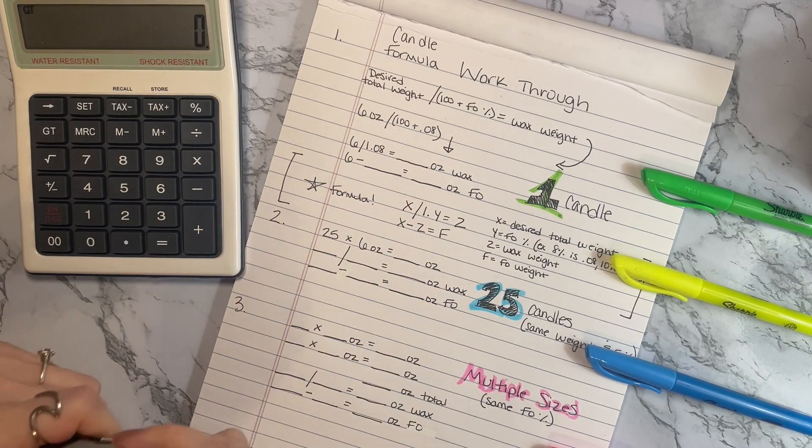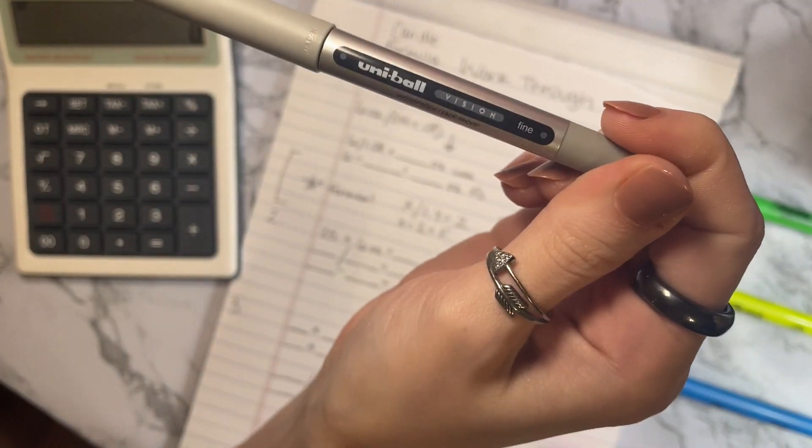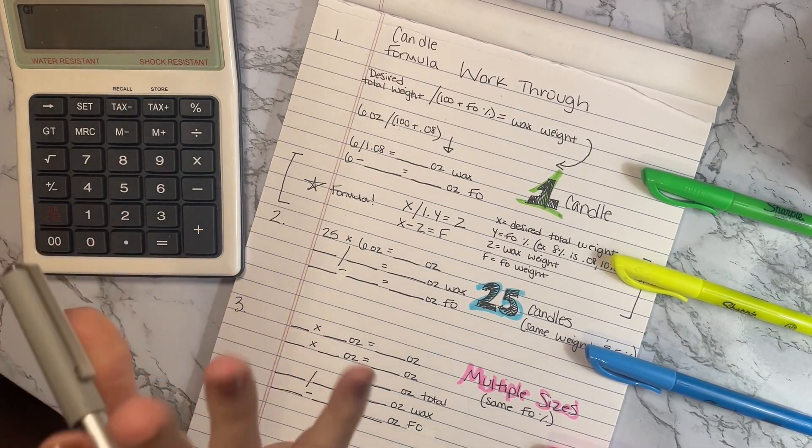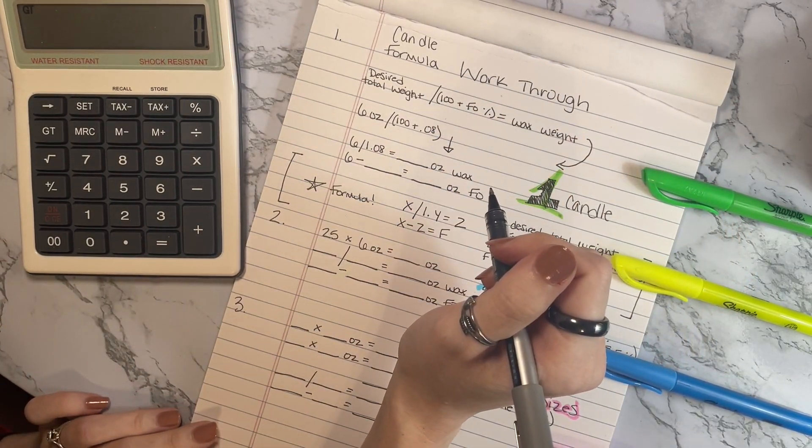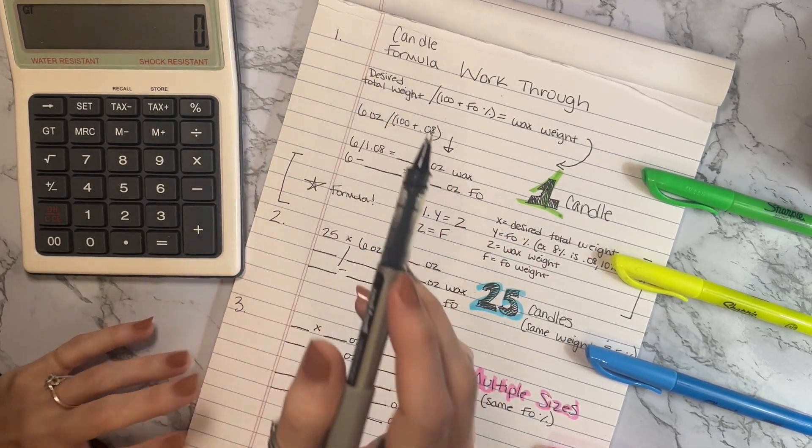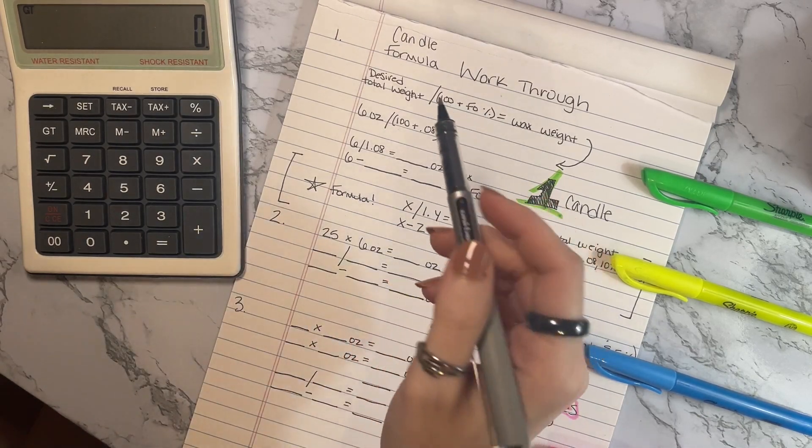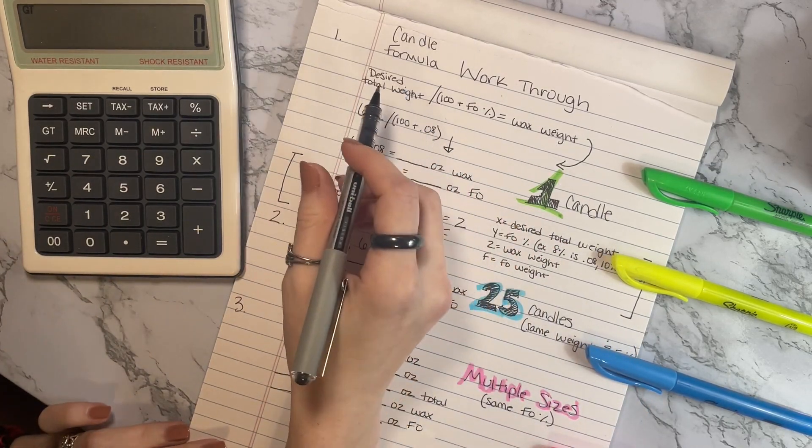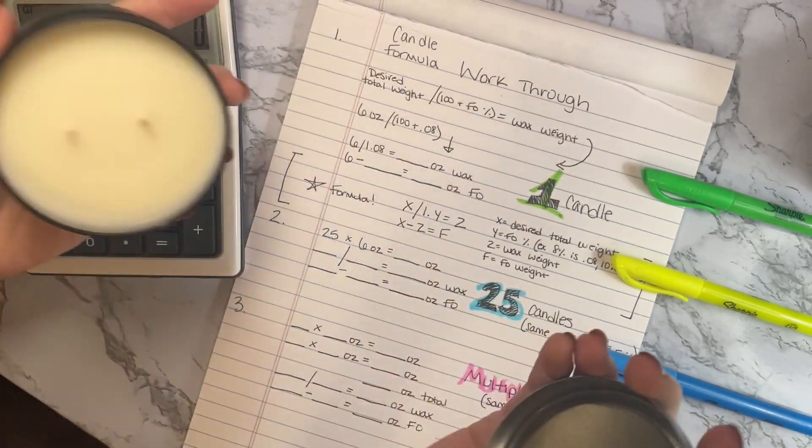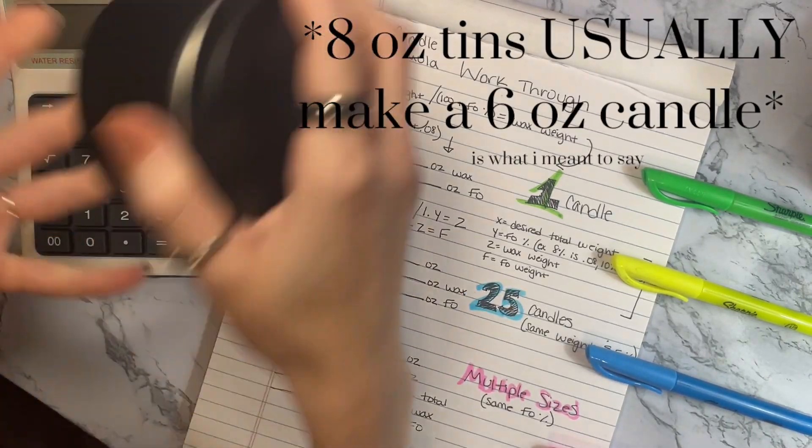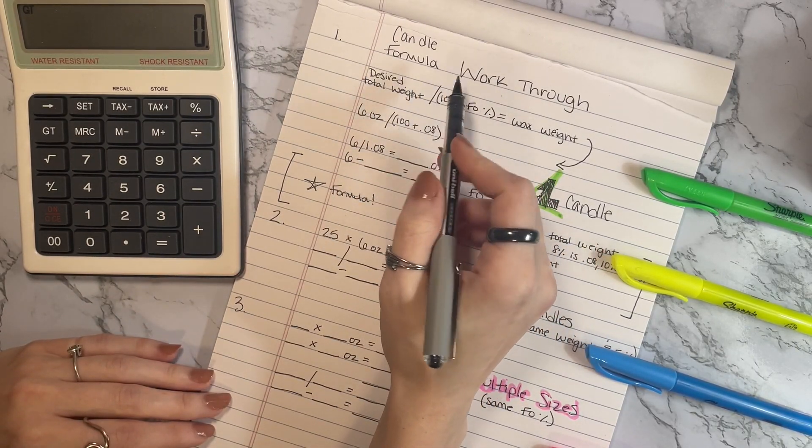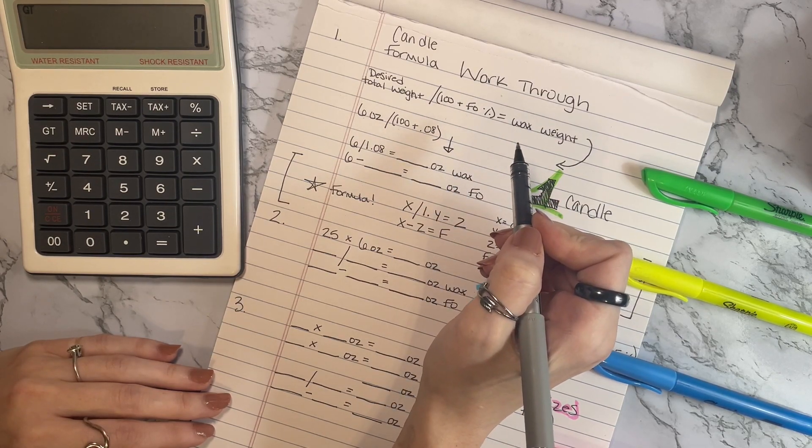I want to show you guys this pen real quick, I've been using these since high school. These are my favorite pens in the world, they're amazing, they last forever, they are so smooth. The candle formula: you're going to want to figure out your desired total weight. Say for instance you have an eight ounce jar and you're trying to figure out how much wax goes in there, and usually it's six ounces. You need to figure out your desired total weight, then you're going to divide that by 100 plus your fragrance oil percentage, and that's going to equal your wax weight.